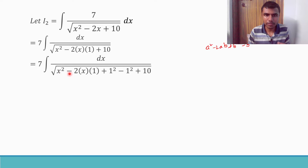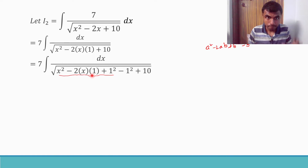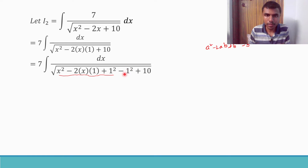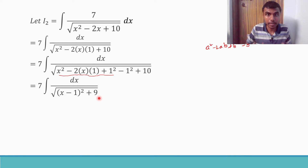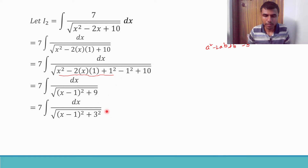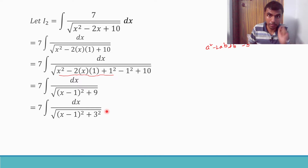The first three terms x² - 2x + 1 form (x - 1)². Then -1 + 10 = +9, and 9 = 3². So x² - 2x + 10 = (x - 1)² + 3². Writing it this way is very useful because there is a standard integration formula we can now apply.